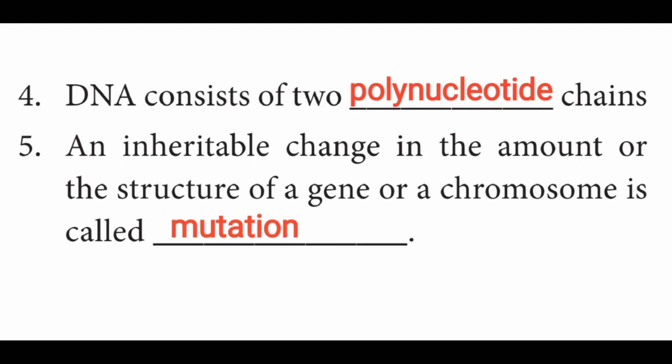Fifth question: an inheritable change in the amount or the structure of a gene or a chromosome is called dash. Answer is: mutation. A change in a gene or chromosome that is heritable and passed on is called mutation.